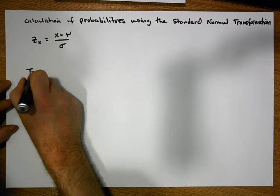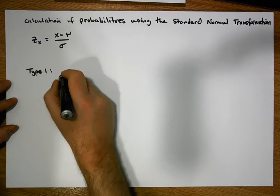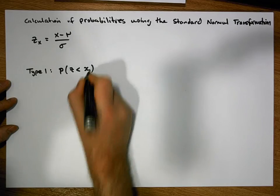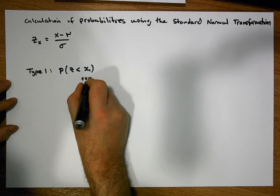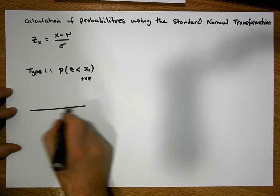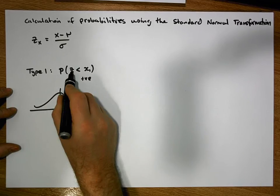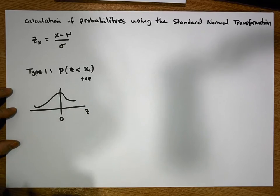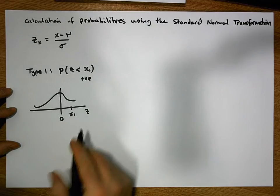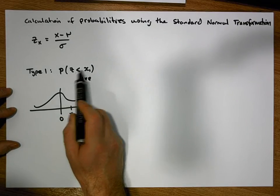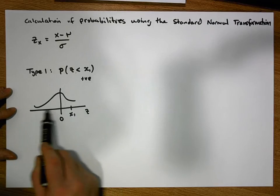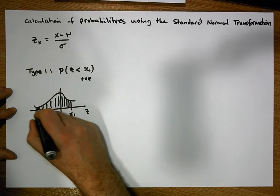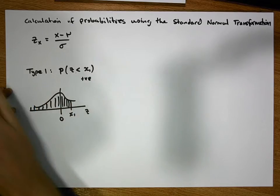Let's just recap. A type 1 probability is a probability of the form: the probability of observing a z-score that's less than a particular x value — let's call that x1 — where x1 is positive. When we draw the curve for that, the horizontal axis is the z-axis, the curve is bell-shaped and centered on 0, and x1 is positive, so it's over to the right. We're interested in areas under the curve to the left-hand side of a positive value.